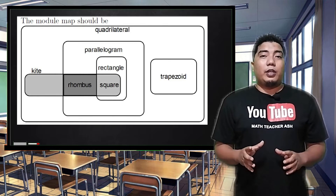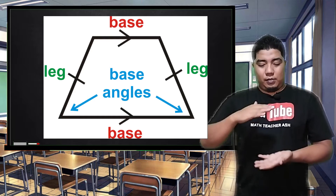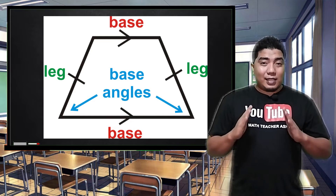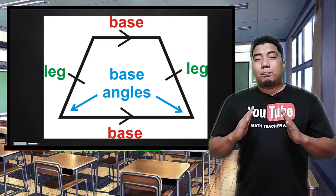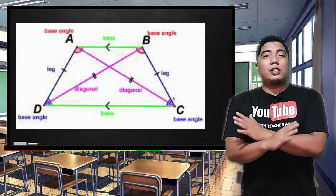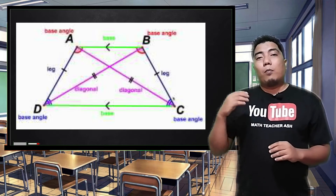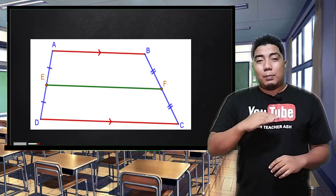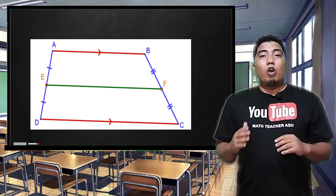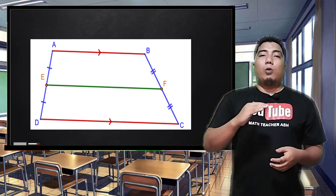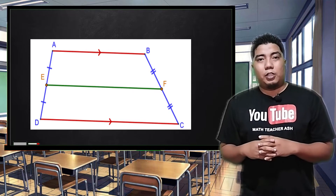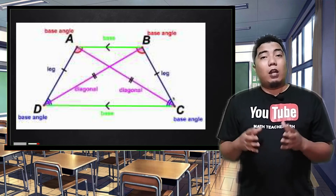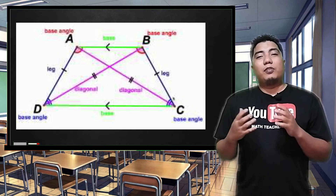In addition, a trapezoid has these following parts. We have the bases — these are the sides that are parallel. We also have the legs, which are the sides of the trapezoid that are not parallel. We also have the diagonals, which are the line segments that connect from one point to the opposite point. And we also have what we call the median, which is the line segment that connects the midpoints of the legs, and is also parallel to the bases of the trapezoid.